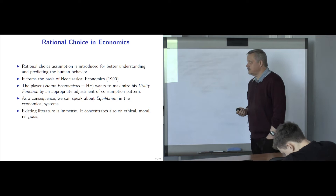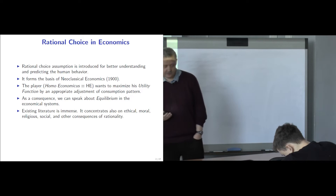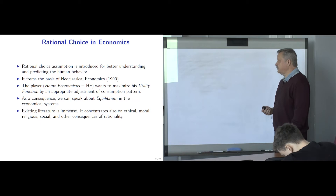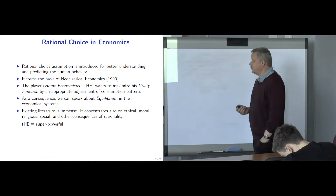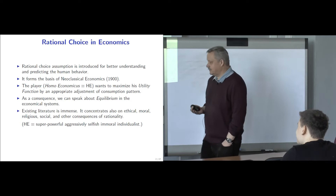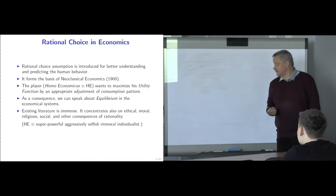There is a huge literature concentrating on the ethical, moral, religious, and social consequences of rationality, and the flow of publications is not decreasing with time. It is a constant topic in optimization theory. Very often, people say that with this assumption of rationality, homo economicus is just a super powerful, aggressively selfish, immoral individualist — and that people in real life are not like that, so they do something different.